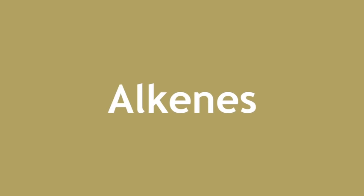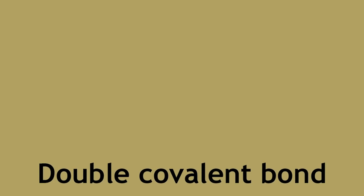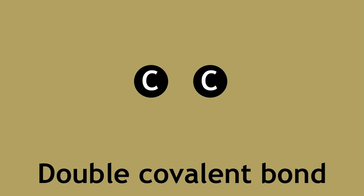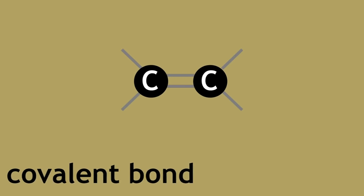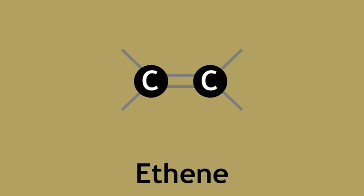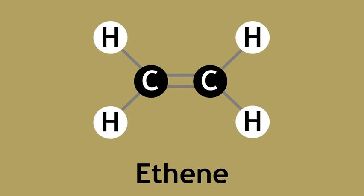The next series is called the alkenes. These are hydrocarbons that contain a double covalent bond between two carbon atoms in the molecule. Just like the alkanes, each carbon atom still needs four bonds but has two bonds already due to the double covalent bond with the other carbon atoms. The ethene molecule is completed by two more bonds with two hydrogen atoms for each of the carbon atoms.